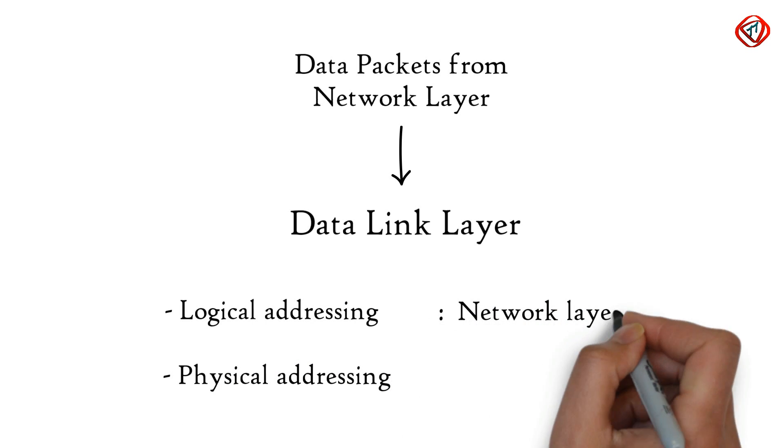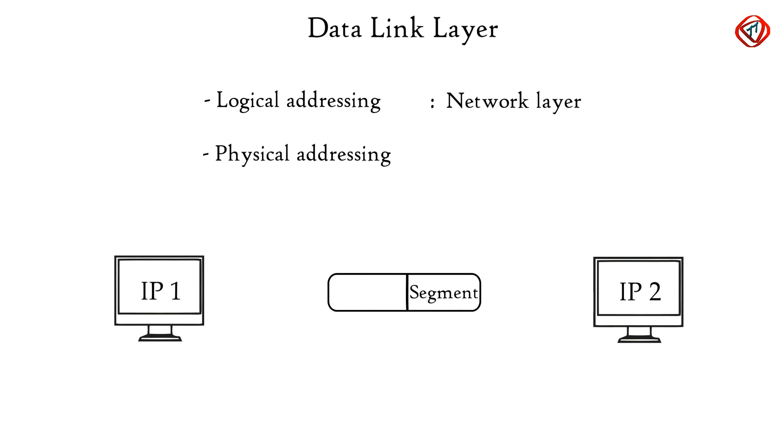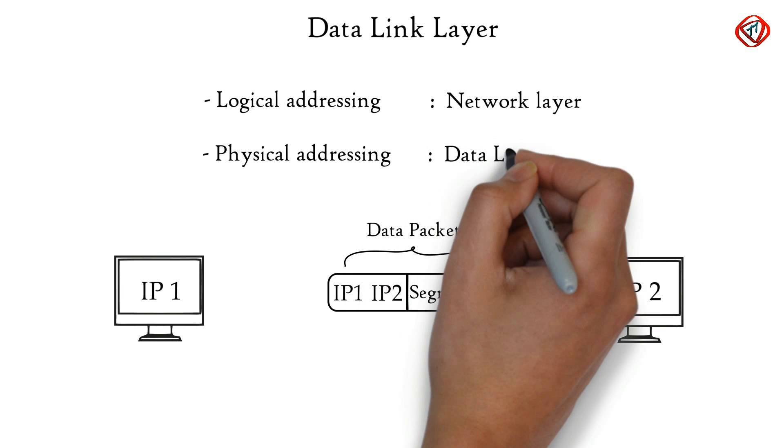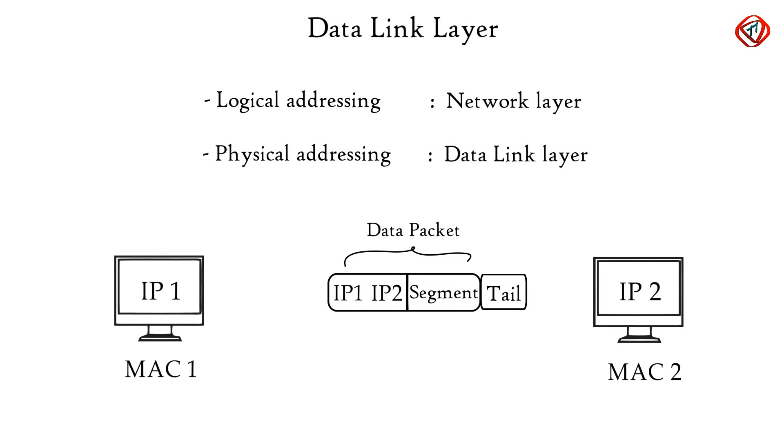Logical addressing is done at the network layer, where sender and receiver's IP addresses are assigned to each segment to form a data packet. Physical addressing is done at the data link layer, where MAC addresses of sender and receiver are assigned to each data packet to form a frame.